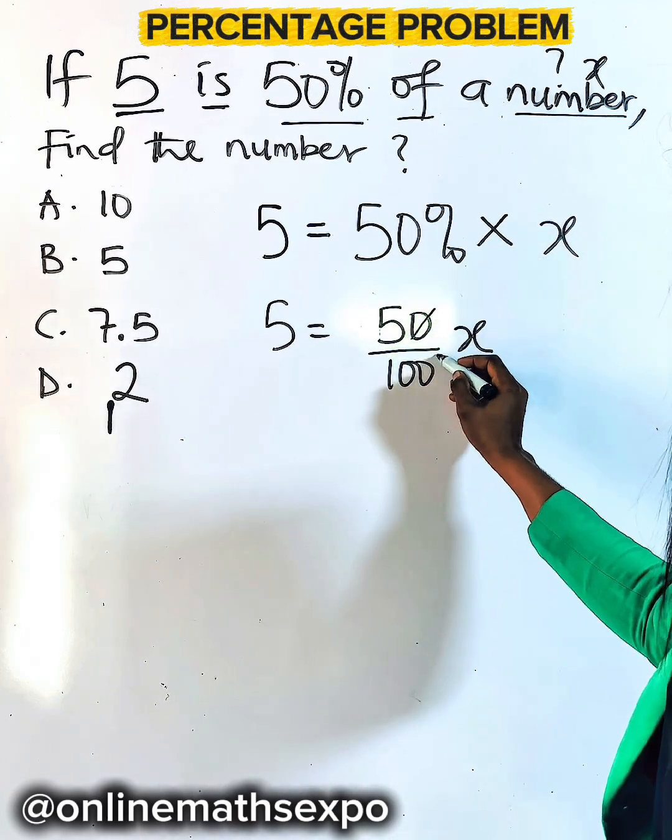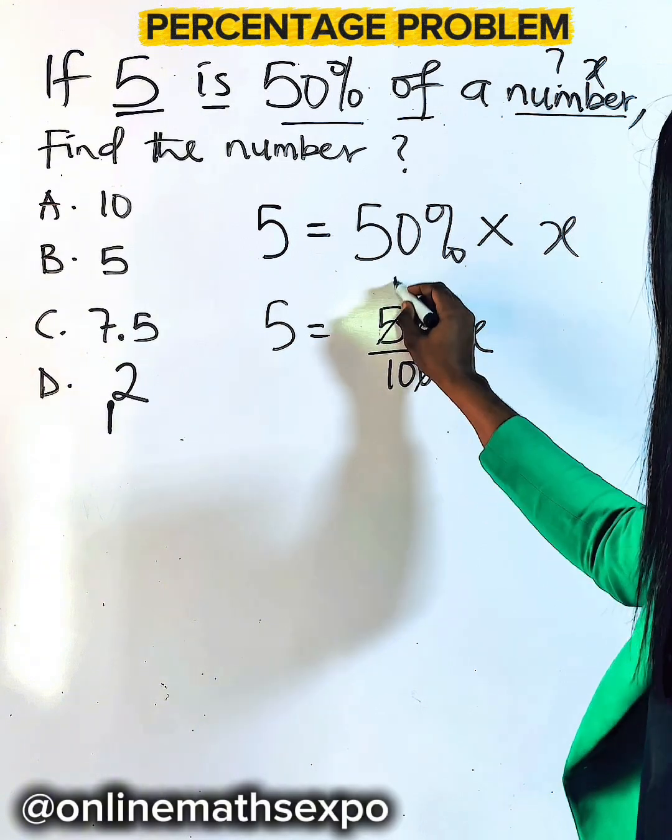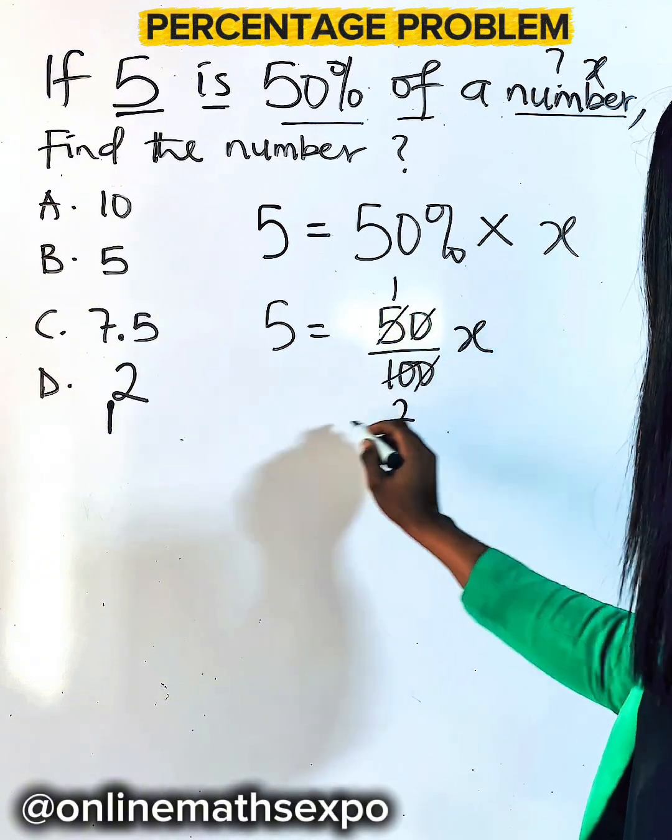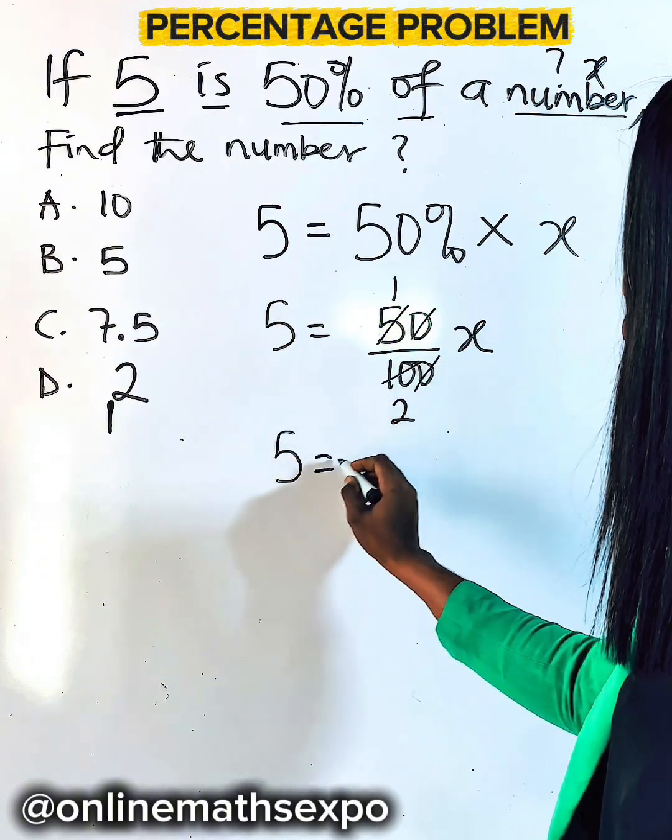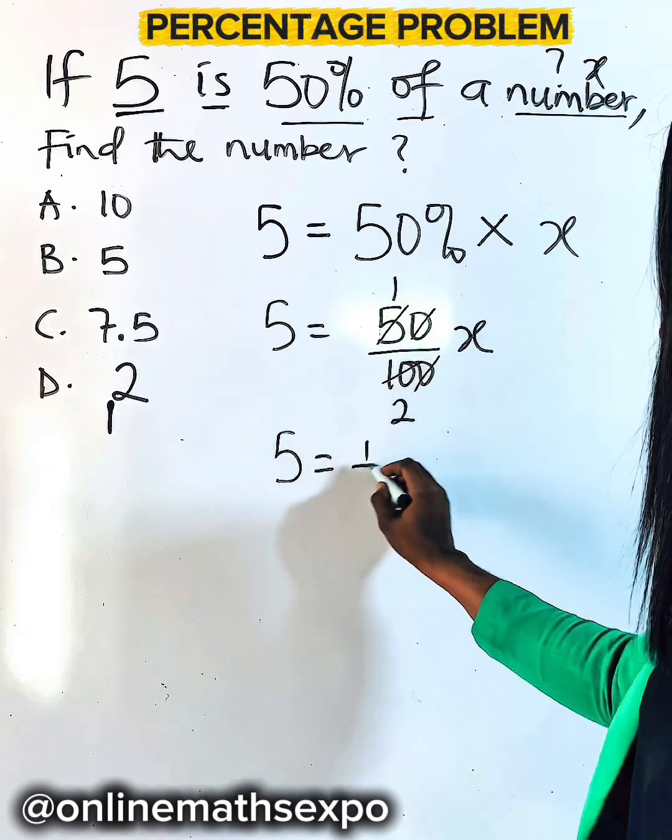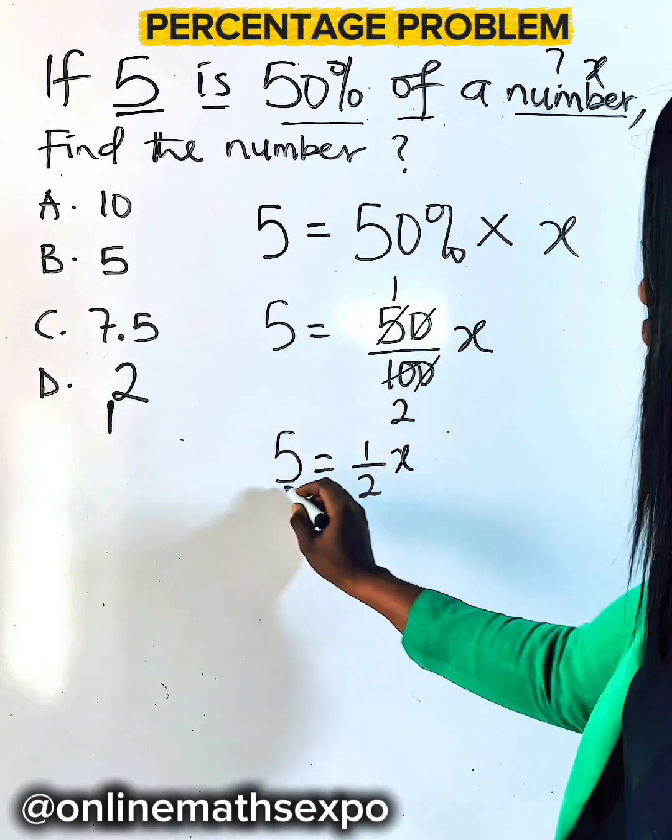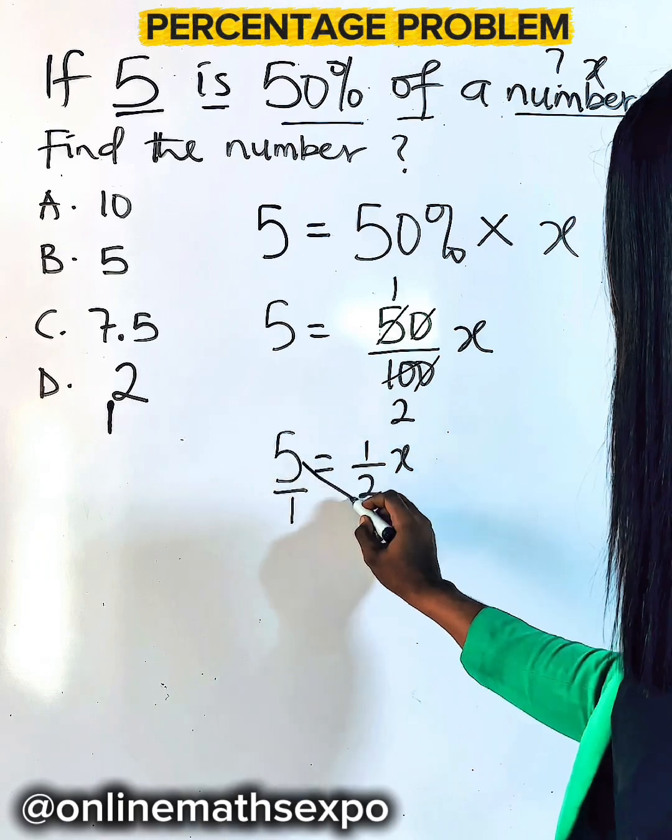You can reduce this. Zero will take off zero. 5 goes in itself once, goes in this 2. So you are having 5 is equal to 1 over 2x. So make this to be over 1, so that you cross multiply.